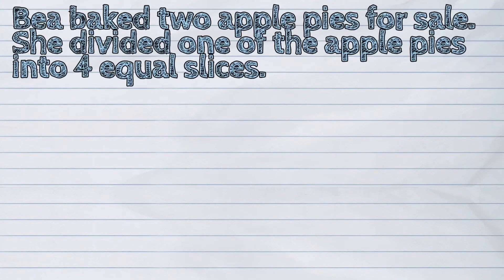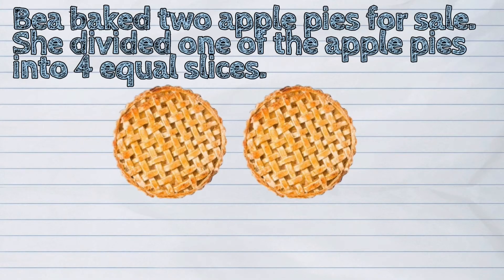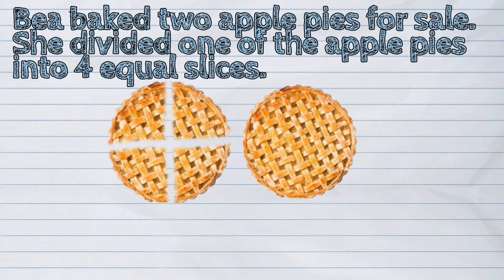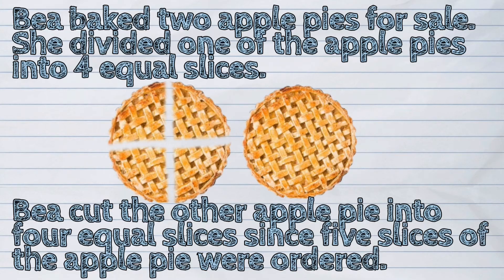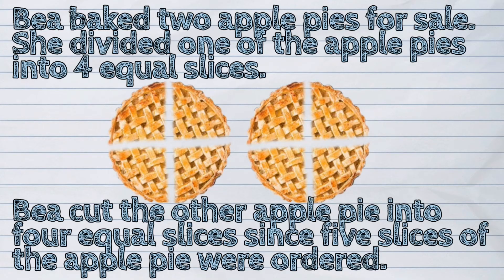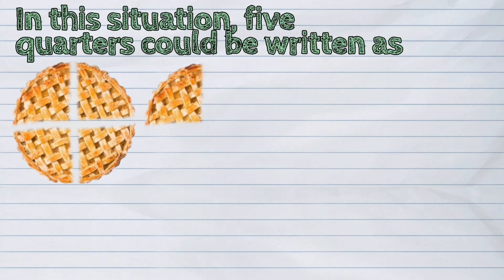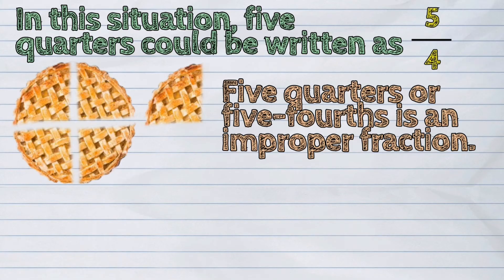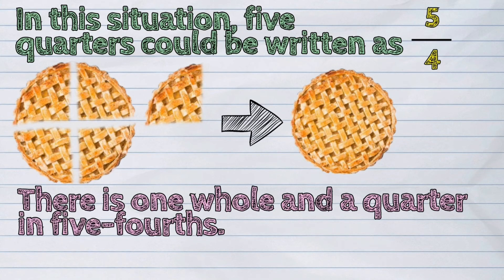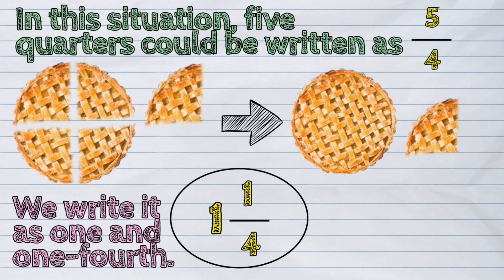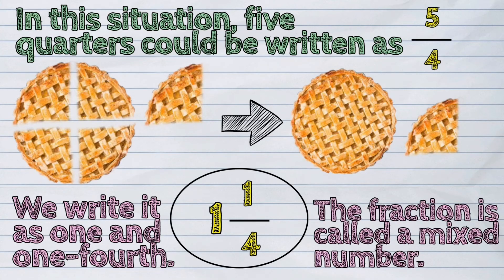Let's have this example. Beya baked two apple pies for sale. She divided one of the apple pies into four equal slices, and cut the other apple pie into four equal slices as well. Since five slices were ordered, five-quarters, or five-fourths, is an improper fraction. There is one whole and a quarter in five-fourths — we write it as one and one-fourth. This fraction is called a mixed number.